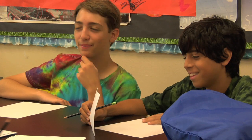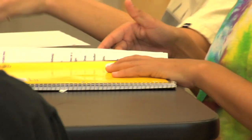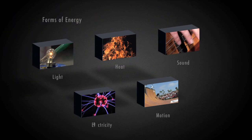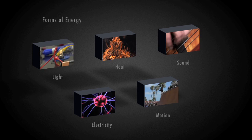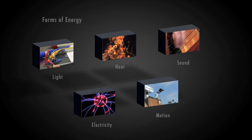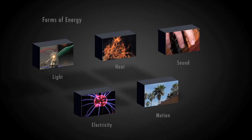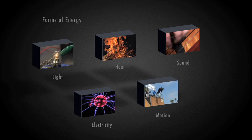We hope you enjoyed the In Tune with Energy Lab. Let's take a look at the different forms of energy you learned about. Light, heat, sound, electricity, and motion are types of energy that allow us to interact with our surroundings. These forms of energy either travel through waves, are created by the movement of atomic particles, or are stored.